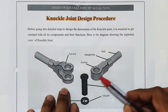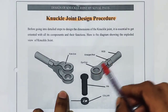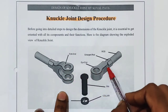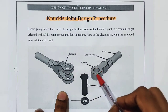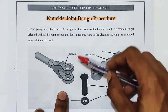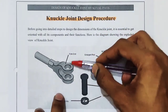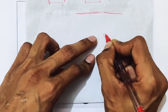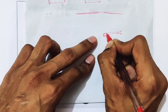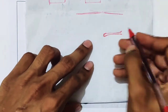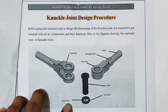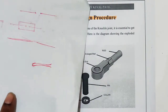Now see how the joint works. We put the single eye or eye end into the cavity of the fork end. You can see the gap between the fork end — we match these holes and insert the knuckle pin from above. Then we put the collar from the underside and use a split pin — similar to what you may have seen in a fan — through a small hole in the pin and collar to secure the assembly.